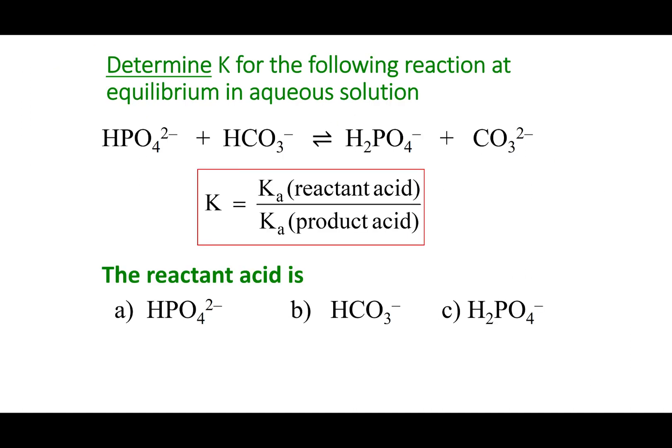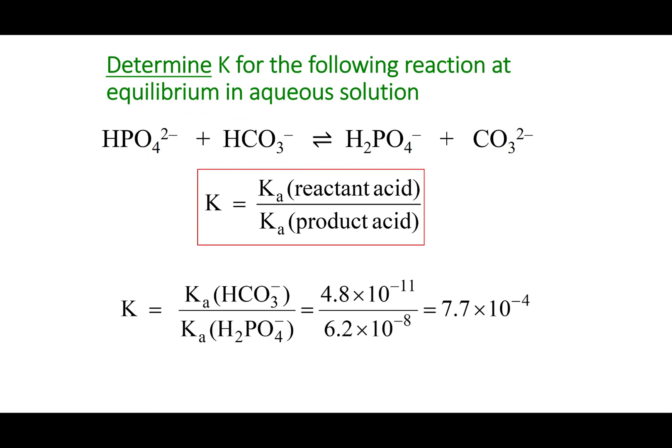So with that said, I want you to get a little bit of practice. Identify which is the reactant acid in this chemical equation. I want the reactant acid. So I'm going to narrow my field down to the two reactants that I have. Now I want to figure out what the acid is. The acid is the one that donates a proton. What I can see is that bicarbonate donates a proton in this equation to give me H2PO4 minus. So it is the acid on the reactant side.